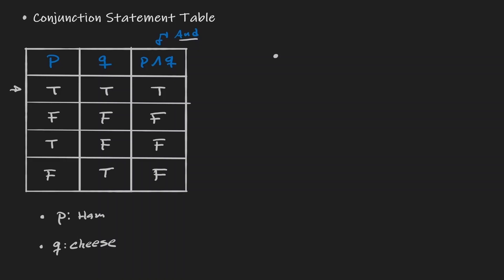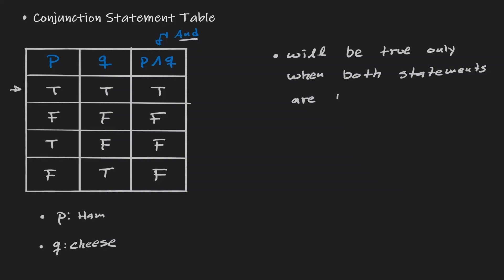One thing to notice within conjunction statements: a conjunction statement will be true only when both statements are true. That only happened in the first row, where both statements were true and the conjunction statement was true.